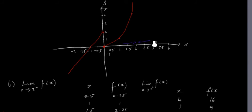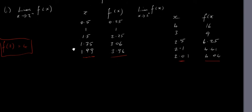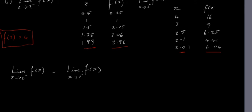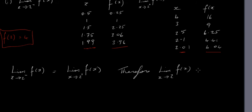We can see that when we approach 2 from both the left and the right, we get the same value. So formally: the limit of f of x as x approaches 2 from the left equals the limit of f of x as x approaches 2 from the right. Therefore, the limit of f of x as x approaches 2 is equal to 4, and it exists.